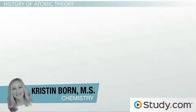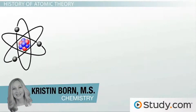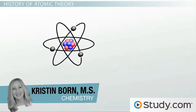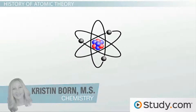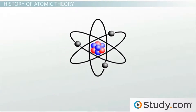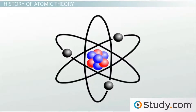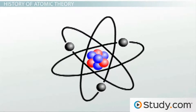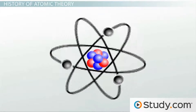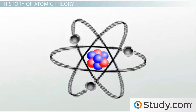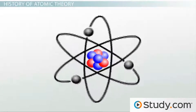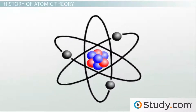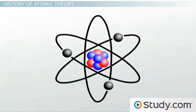Picture an atom. What does it look like? Most likely, it will resemble something like this: a fairly large nucleus surrounded by orbiting electrons whizzing around it. This image is a popular icon of the atom, but it only vaguely represents our current model of what the atom looks like.